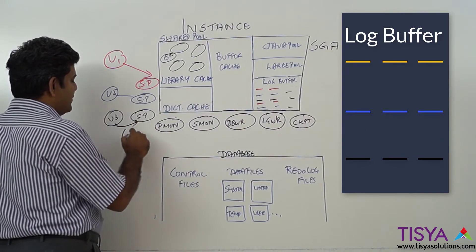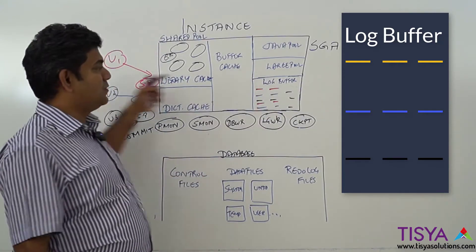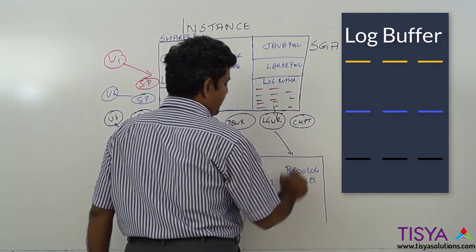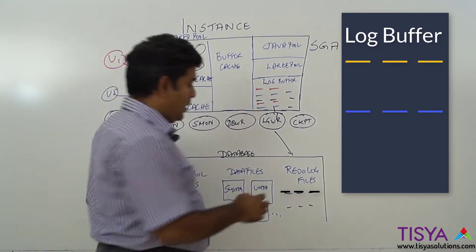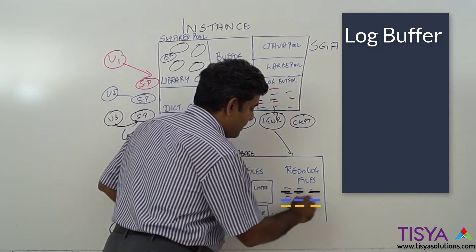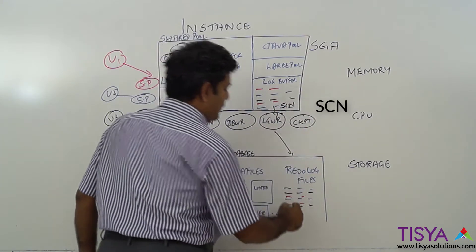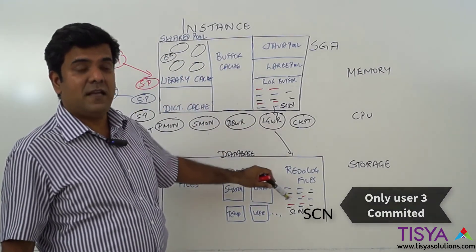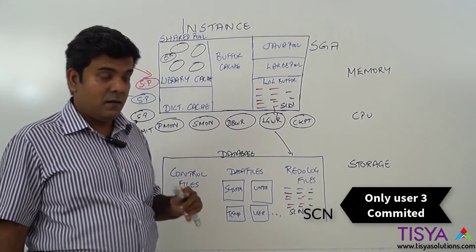Now let's say only user3 issues a commit. It means user1 and user2's changes are not to be committed. But the behavior is that when the log writer writes to the redo log files, it not only writes the changes for user3 who is committing — it actually empties all the contents of the log buffer. However, the SCN is generated only for user3, shown in black, meaning the commit is only for user3's transaction.